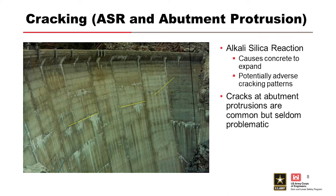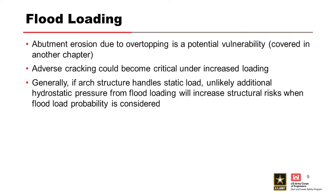Another example crack is one perpendicular to the abutment, which is generally less concerning because the orientation makes it harder to link up with other cracks and joints to create movable blocks. Moving on to flood loading — overtopping causing erosion of the abutments is certainly a failure mode, but that's covered in other chapters. The focus here is on issues initiated within the concrete itself that lead to failure.